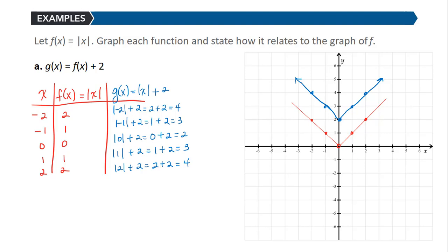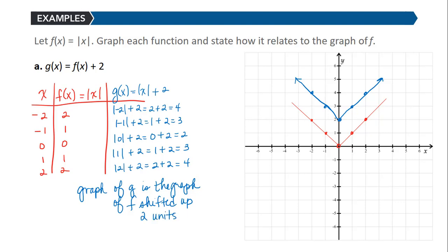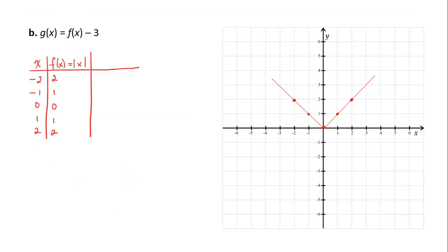So we say that the graph of g is the graph of f shifted up 2 units. Notice that this outside addition of 2 increased all of the y values by 2 units, which caused that vertical shift up. Now let's use the same function, absolute value of x, and look at g of x, which is f of x minus 3. So g of x, in this case, is the absolute value of x minus 3.